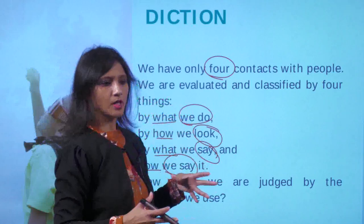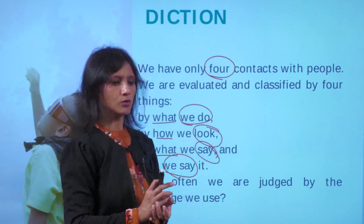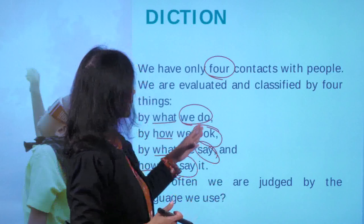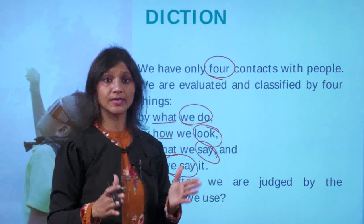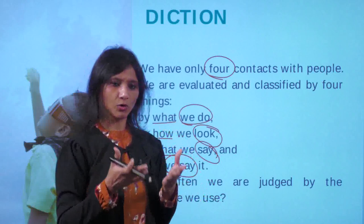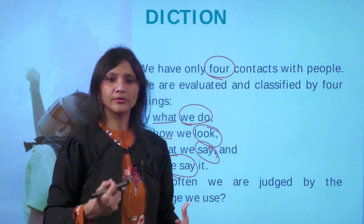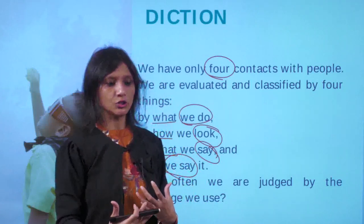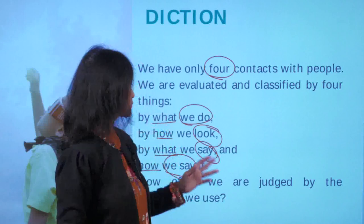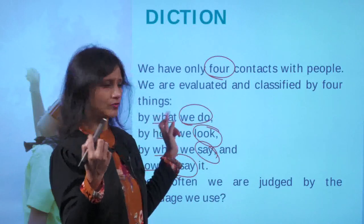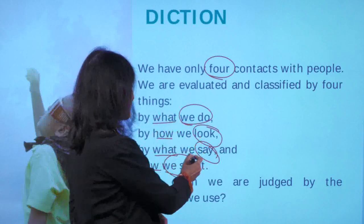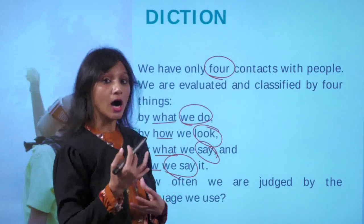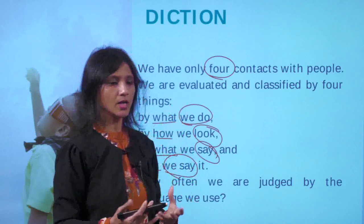By what we do — our profession, our side hustles, what we do for our living, for society, for our family. How we look — our personality, our body language, our appearance, how we dress, the eye contact we maintain. What we say, and finally how we are saying it. These are the four things on which people evaluate and judge us.